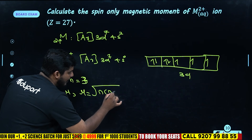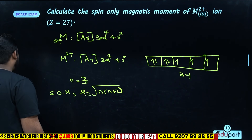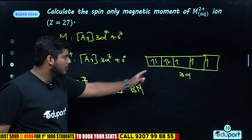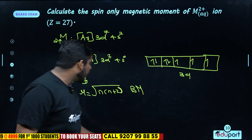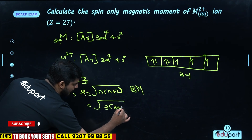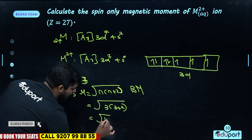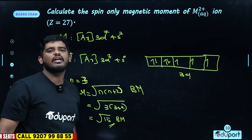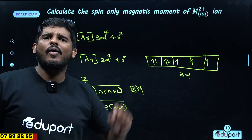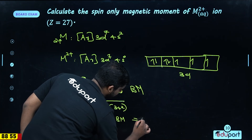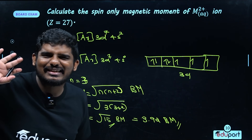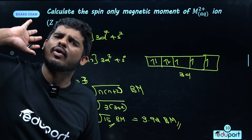Using the spin-only magnetic moment formula: μ = √(n(n+2)) Bohr magnetons, where n = 3 unpaired electrons. So μ = √(3 × 5) = √15 Bohr magnetons, which equals approximately 3.87 BM. This gives us roughly 3.92 Bohr magnetons.